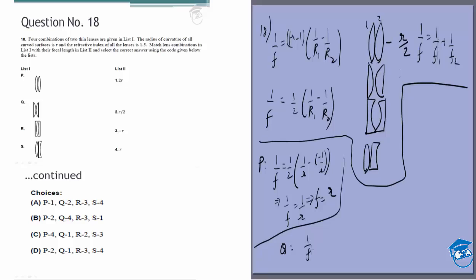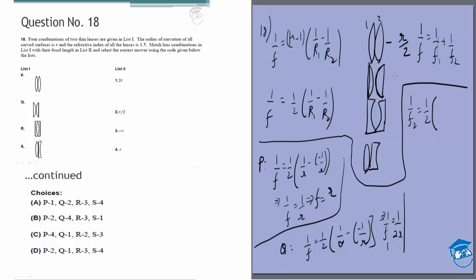For option Q: the first lens has R1 = infinity and R2 = −R, giving 1/f1 = (1/2)(0 − (−1/R)) = 1/(2R). For the second lens, R1 = +R and R2 = infinity, giving 1/f2 = (1/2)(1/R − 0) = 1/(2R). Adding them: 1/f_total = 1/(2R) + 1/(2R) = 1/R, so for Q the answer is R.